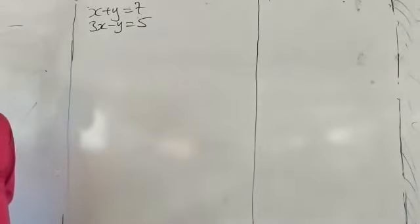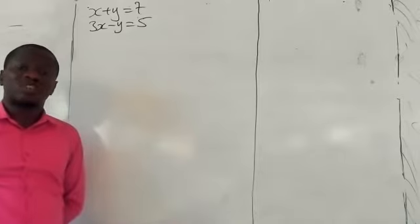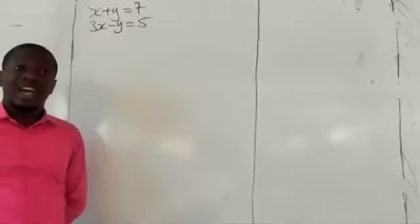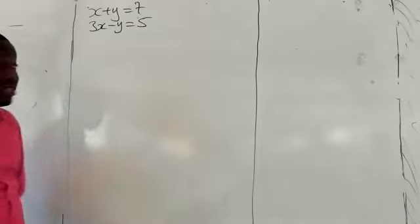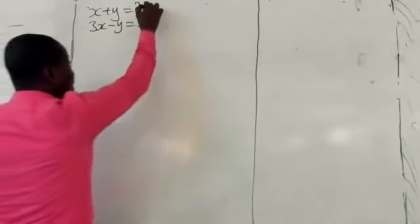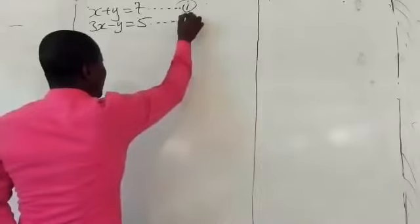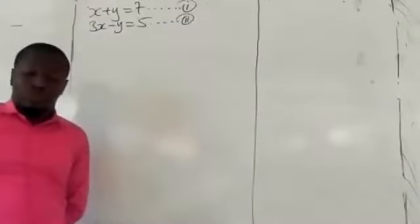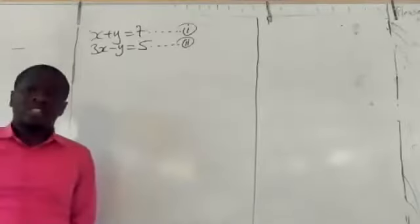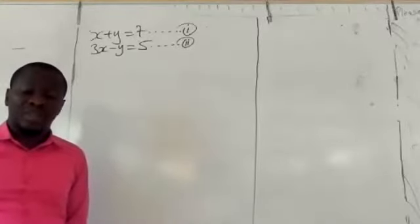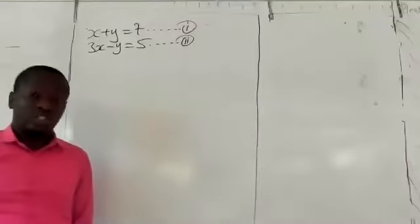The first thing you need to note is that in solving any simultaneous equations, there are basically two equations involved. The first one is labelled equation 1, and the second one is labelled equation 2. Now, let us say we want to use the elimination method in solving these particular questions.